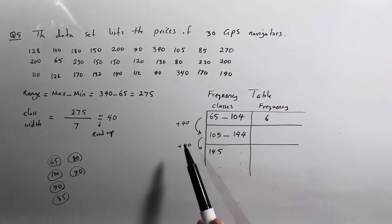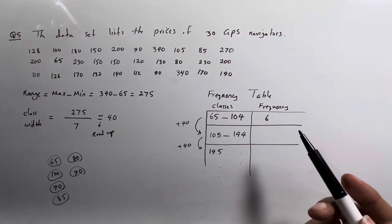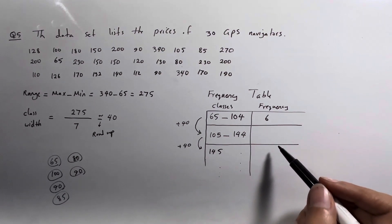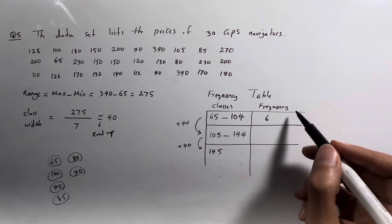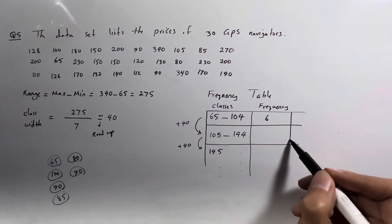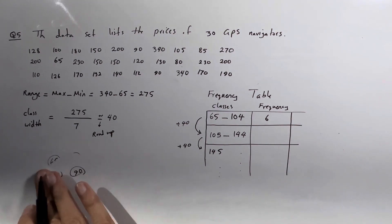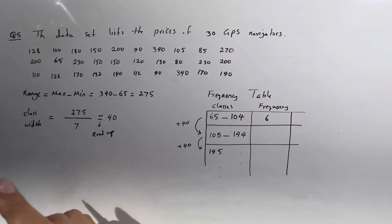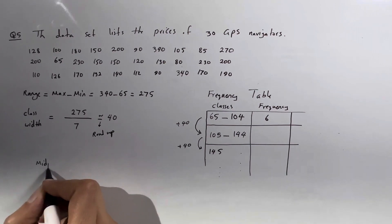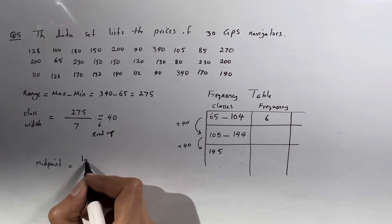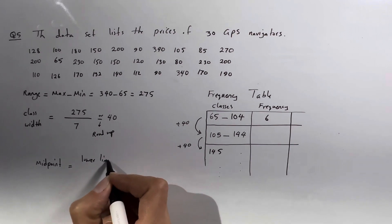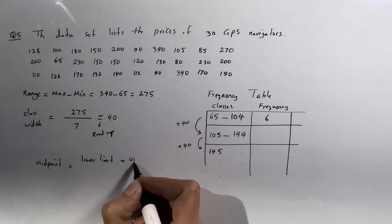For the frequency table, we are interested in finding the midpoint. The formula for midpoint is: take the lower limit of the class, add it to the upper limit of that class, and divide by two.